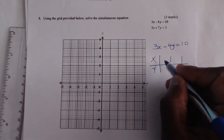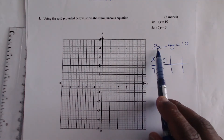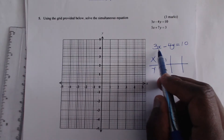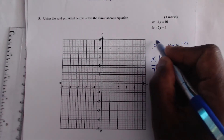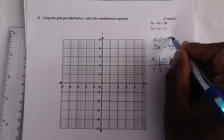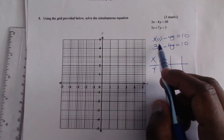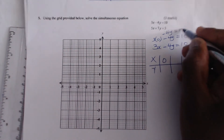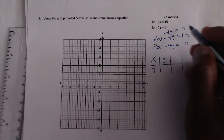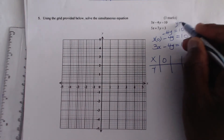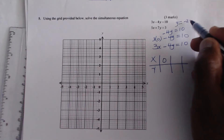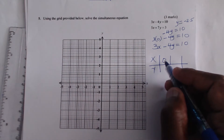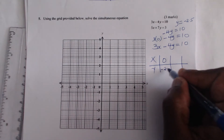I will start with when x is 0. So when x is 0, you just substitute 0 in this equation. When you substitute 0 here, you will get 3 times 0, which gives 0 minus 4y is equals to 10. So minus 4y is equals to 10. And finally, when you divide, y will give negative 2.5. Divide 10 by 4. So when x is 0, you substitute x here, you get y will be negative 2.5. You can use the third one for confirmation.